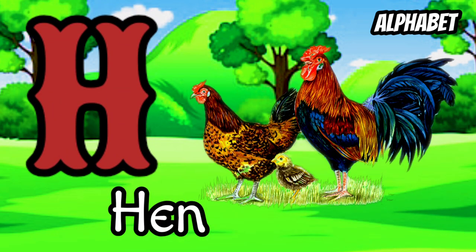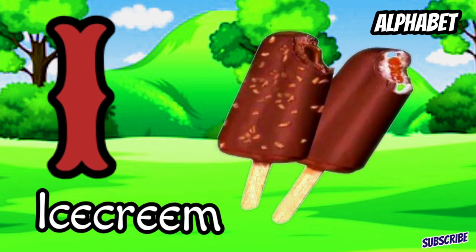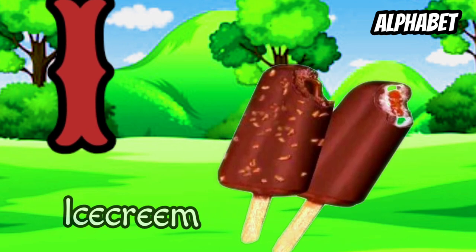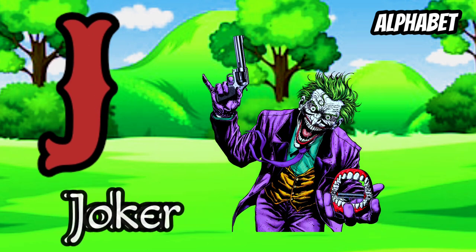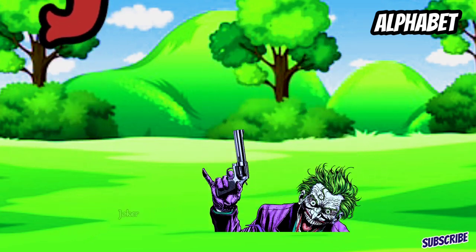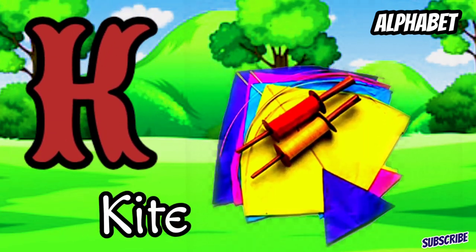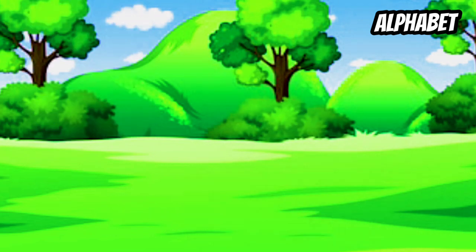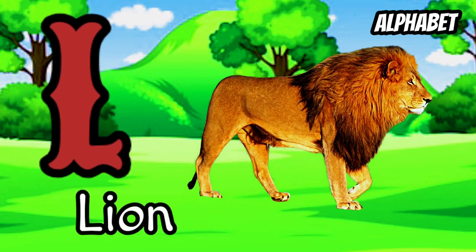I for ice cream, J for joker, K for kite, L for loin.